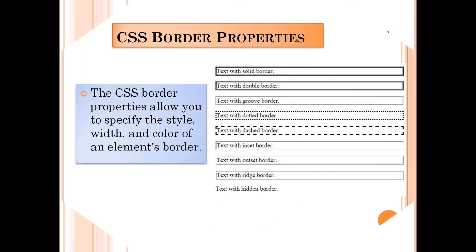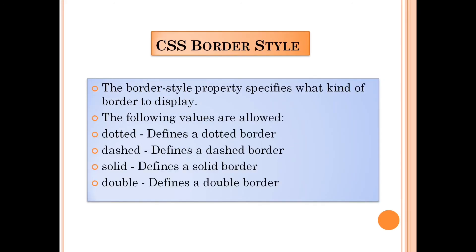The CSS border property allows you to specify the style, width, and color of an element's borders. Here we have borders on all sides, a bottom border, a rounded border, and a colored left border. We have different types of borders right here.